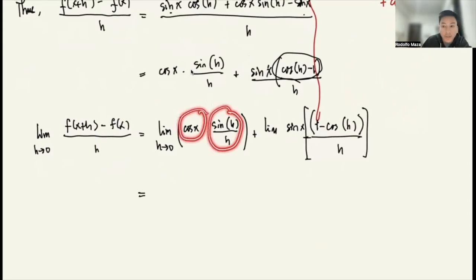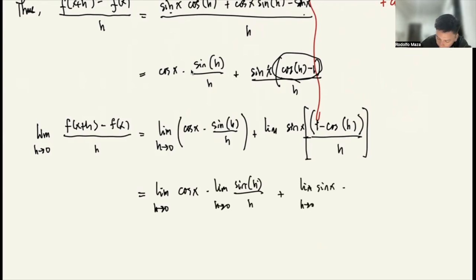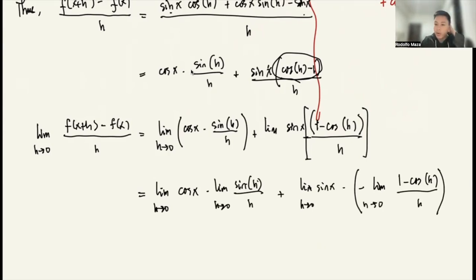Each term is a product of two functions, and the limit of a product equals the product of the limits. So I can separate them. We know that the limit of (1 minus cosine h)/h as h→0 is 0, and the limit of sine h over h as h→0 is 1.